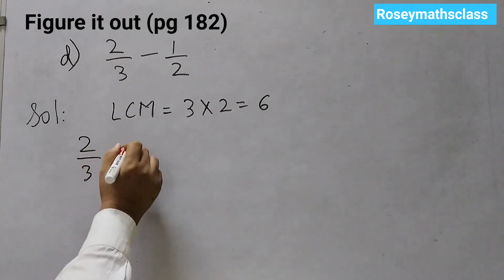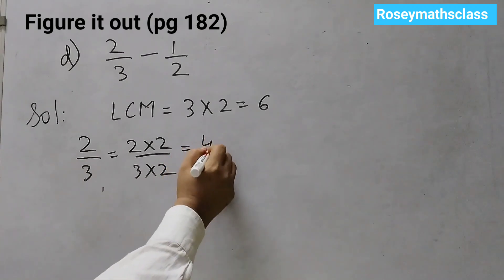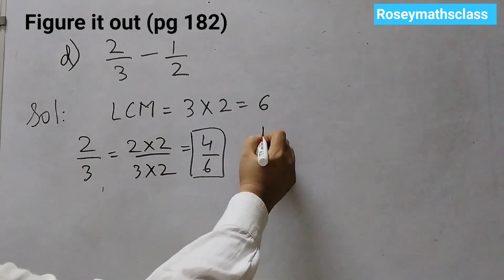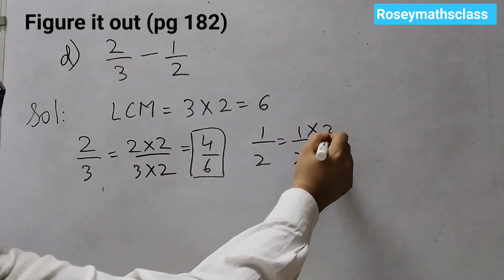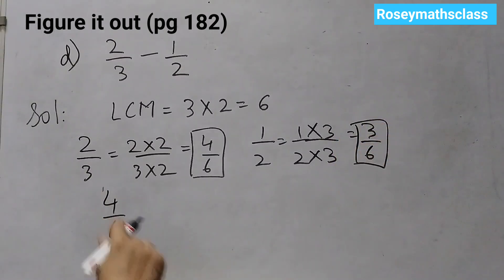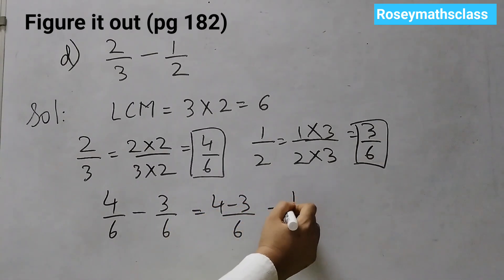Now 2 by 3 multiply by 2. 2 to the 4, 3 to the 6, 1 fraction we got and 1 by 2. So 1 by 2, we will multiply by 3. 3 upon 6. 4 upon 6 minus 3 upon 6. 4 minus 3 upon 6, 1 upon 6. So that's the answer for the last one. With this we complete question number 1.